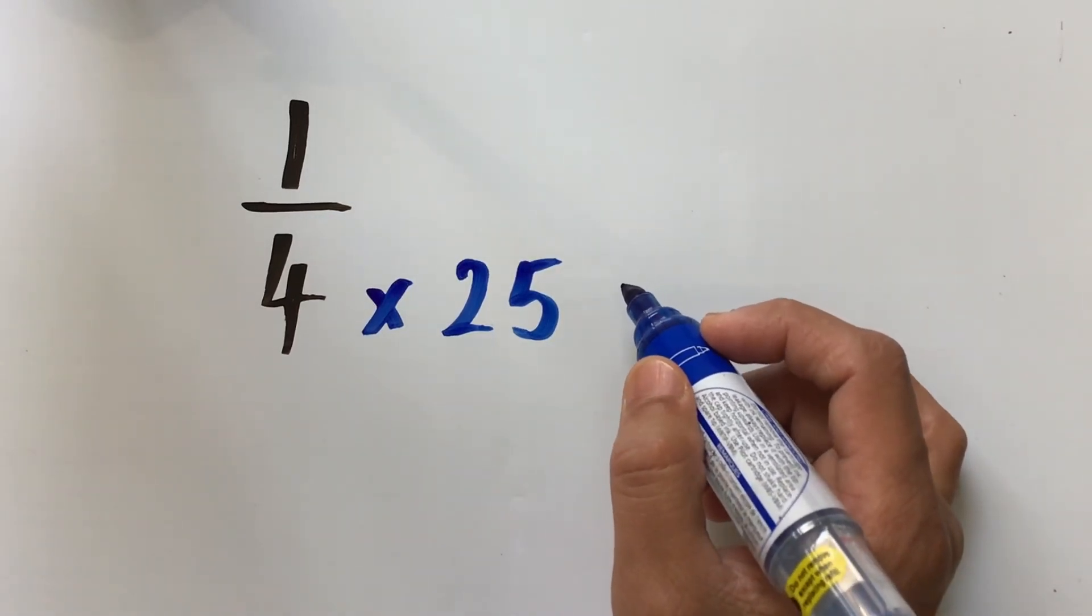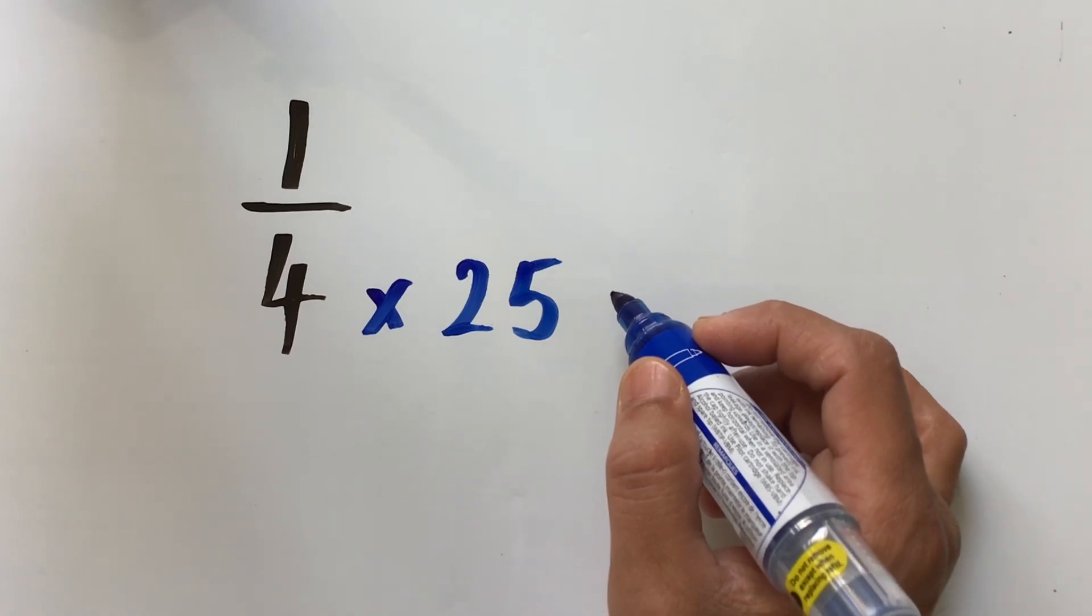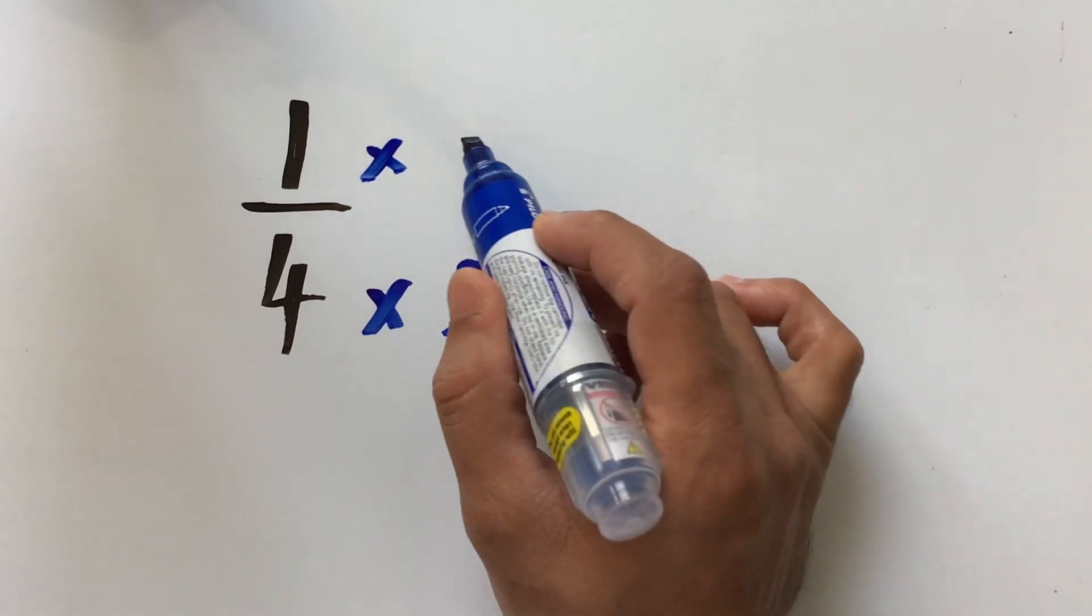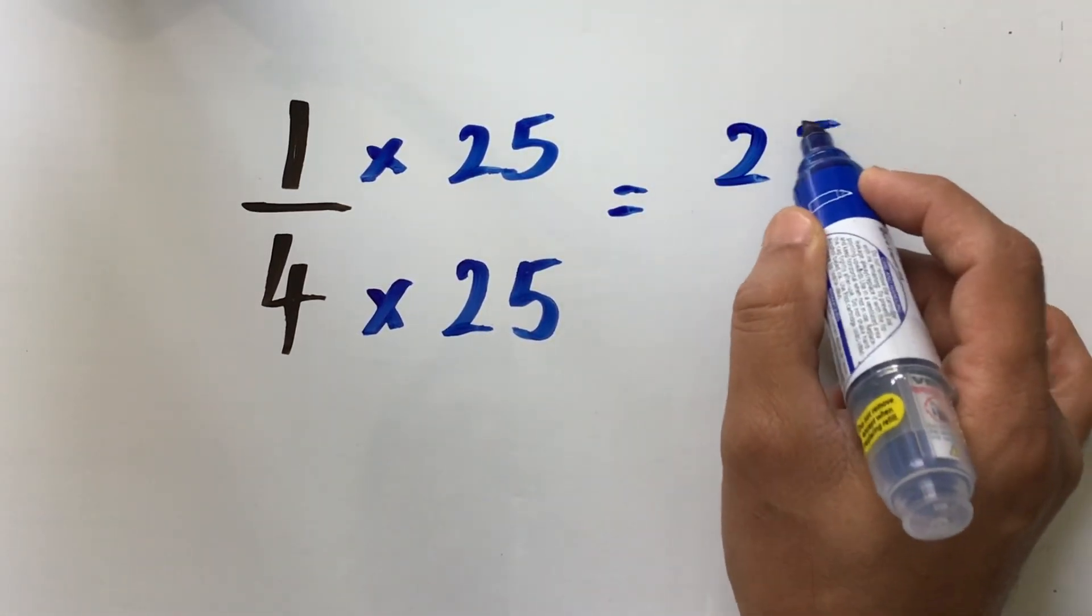However, we also know that if you do something to the denominator, the same operation must be done with the numerator. So here, we are going to multiply the numerator also by 25, which gives us a new fraction 25 over 100.